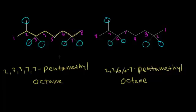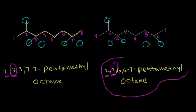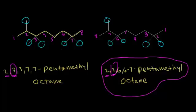To give substituents the lowest numbers possible, the first numbers tie at two versus two. So we go to the next number: three versus two. Since two is lower than three, 2,2,6,6,7-pentamethyloctane is the correct IUPAC name. This is called the first point of difference rule — if there's a tie with the first number, compare the second, and so on.